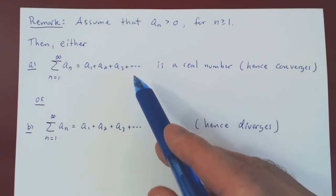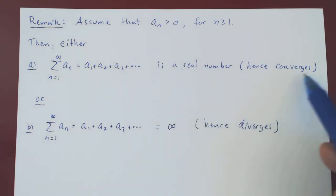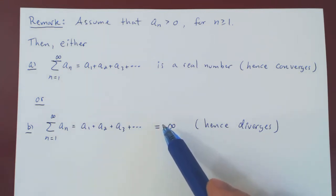The series will be finite, so it will give you a real number, therefore it converges. Or the series is infinite, therefore it blows up, and so it diverges.